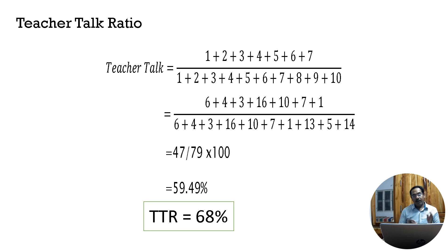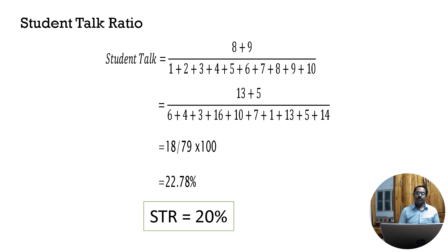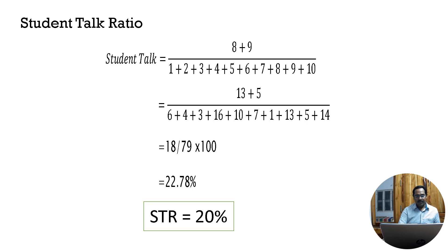The normative value for teacher talk ratio given by Flanders is 68%. For student talk ratio: out of 10 categories, 7 go for teacher, 2 go for student (categories 8 and 9), and 1 for silence. The tallies in categories 8 and 9, divided by the overall tally, multiplied by 100, give us 22.78% in our example. The normative value is 20%, so a class around 20% student talk is considered a good class.